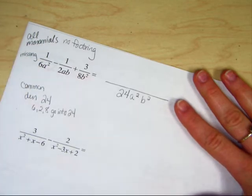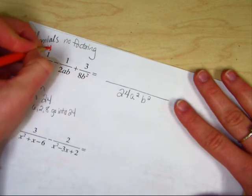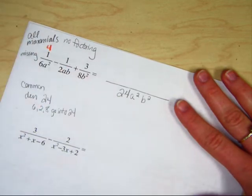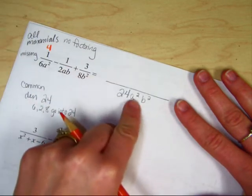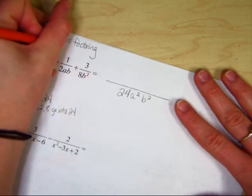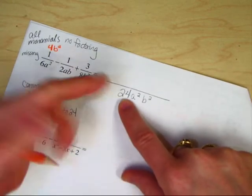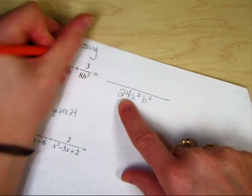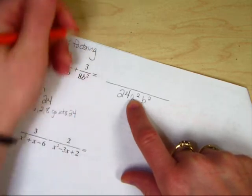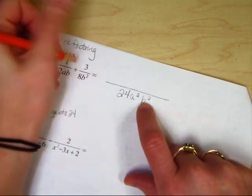How does 6 become a 24? By multiplying by 4, right? Because 6 times 4 is 24. Am I missing any a's? No, but I am missing b squared. How does 2 become a 24? 12. How does a become an a squared? A. How does b become a b squared? B.